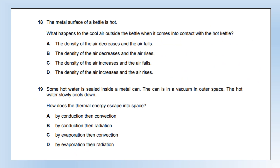The metal surface of a kettle is hot. What happens to the cool air outside when it contacts the hot kettle? The air warms up. When something warms up, it expands — its volume increases — so its density decreases. As the air expands it becomes less dense than the surrounding air and accelerates upwards (rises). We need an answer stating density decreases and air rises. Options with incorrect conclusions about density are eliminated, leaving option B.